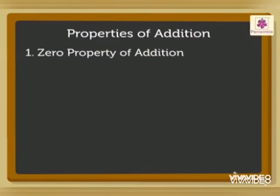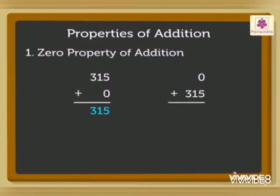Zero property of addition. Let us take a number 315 and 0. If we add 315 to 0, we get the sum 315. And even if we add 0 to 315, we get the sum 315. This tells us that the sum of 0 and any number is the number itself.